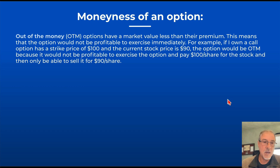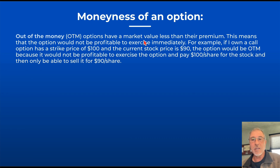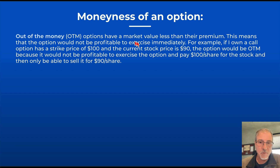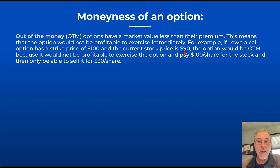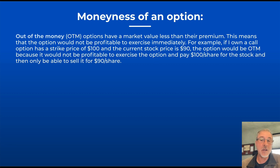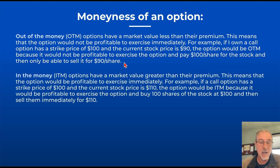As far as moneyness of an option, an out of the money option has market value less than the premium, meaning the option would not be profitable to exercise. For example, if I own a call option with a strike price of $100 and the current stock price is at $90, the option would be out of the money because it would not be profitable — paying $100 a share for stock you can only sell for $90.